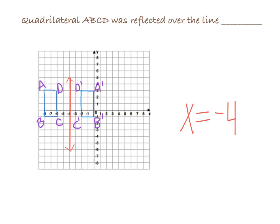If y is 4, x is negative 4. If y is 2, x is still negative 4. If y is 0, x is negative 4. So every vertical line is going to take a form like this, x equals something. So in this case quadrilateral ABCD was reflected over the line x equals negative 4.